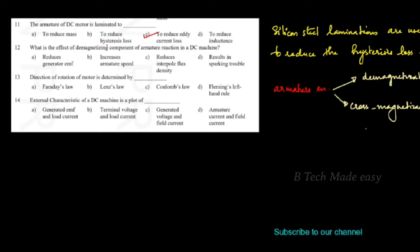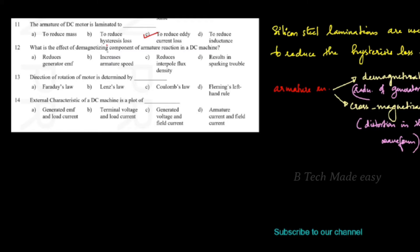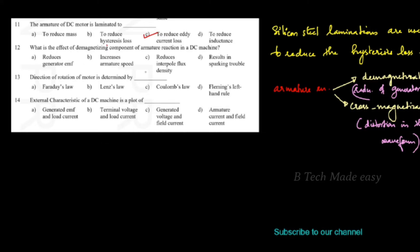The demagnetizing component of armature reaction in a DC machine results in reduction of generator EMF and causes distortion in the waveform. The options are: reduces generator EMF, increases armature speed, reduces inter-pole flux density, or results in sparking trouble.